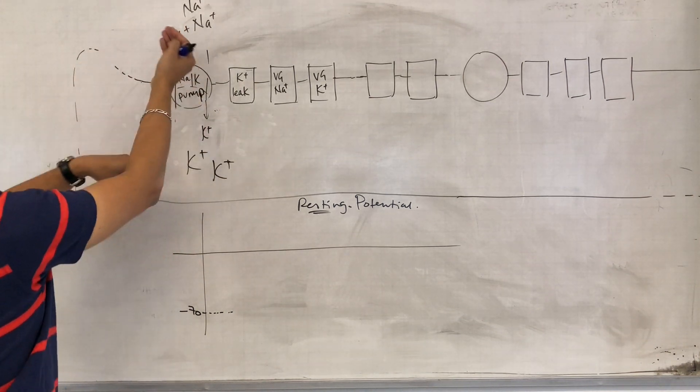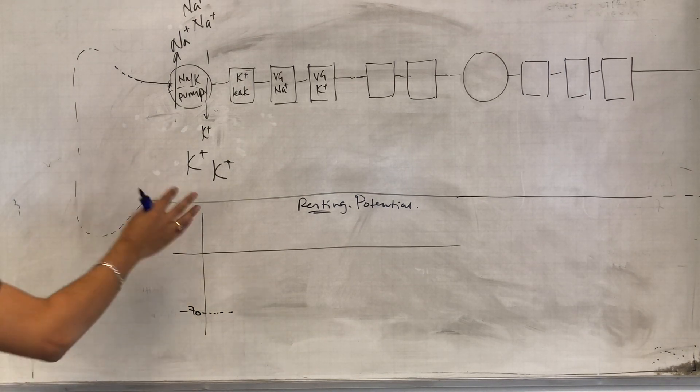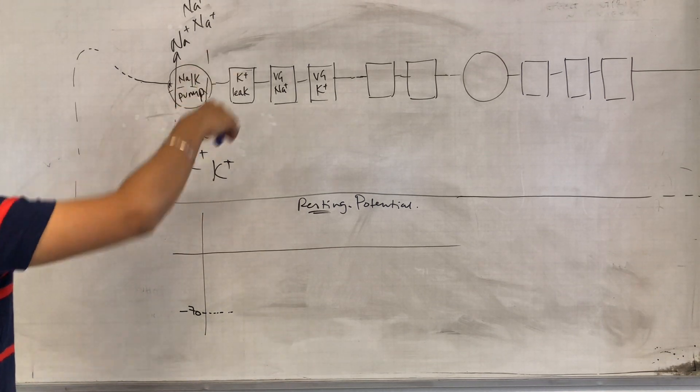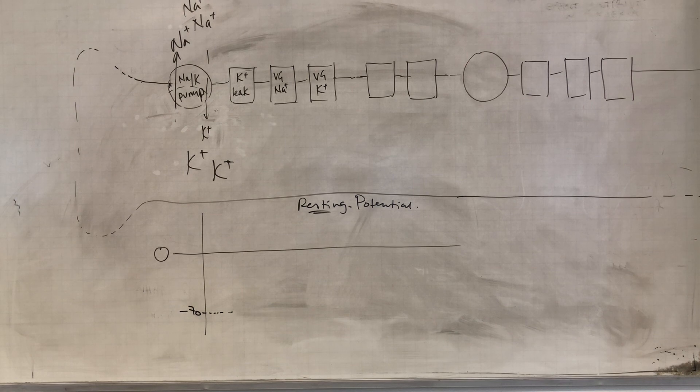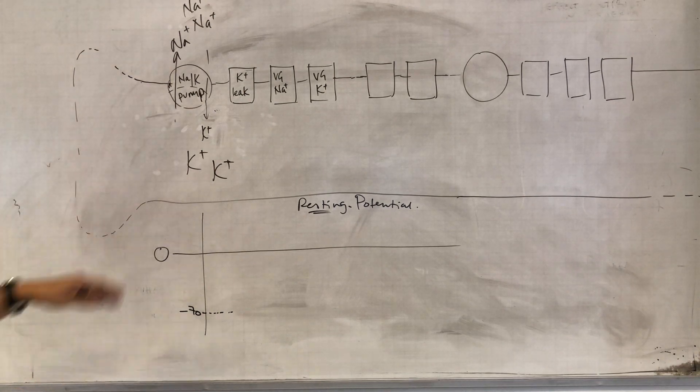But those ions are still moving into the area with the higher concentration, so that means energy is required. This by itself would result in a potential difference across the cell membrane of zero millivolts, because there's positive inside and equally the same number of positive ions outside.